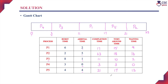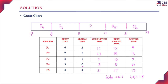Finally, we find the average turnaround time and average waiting time. Average turnaround time is the sum of all turnaround times divided by the number of processes. The sum is 15+18+10+3+17 = 63, divided by 5 equals 12.6 milliseconds. Average waiting time is the sum of all waiting times divided by the number of processes: 9+16+2+0+13 = 40, divided by 5 equals 8 milliseconds.